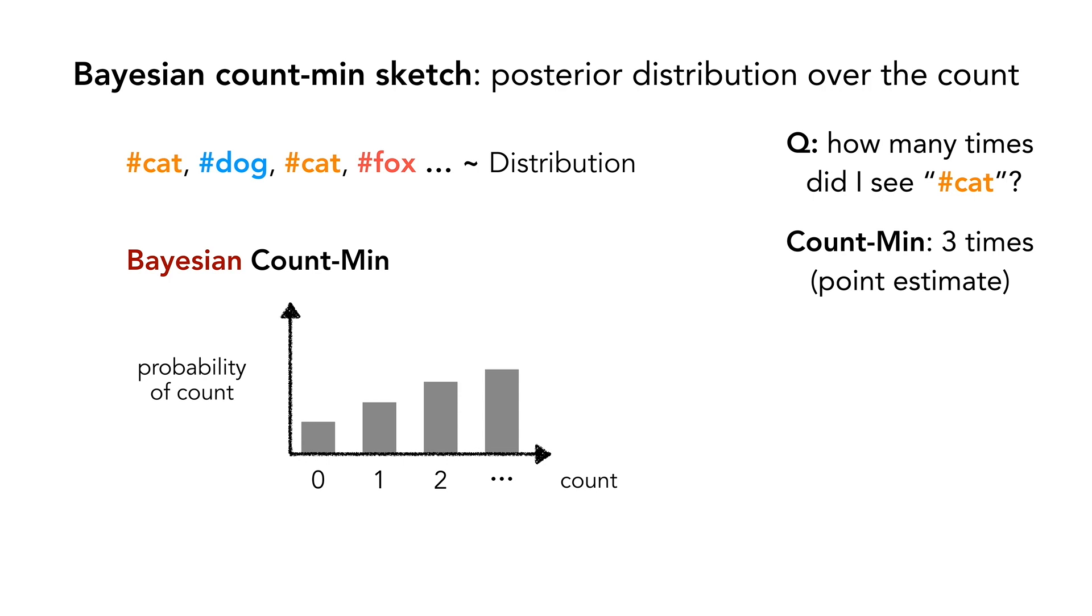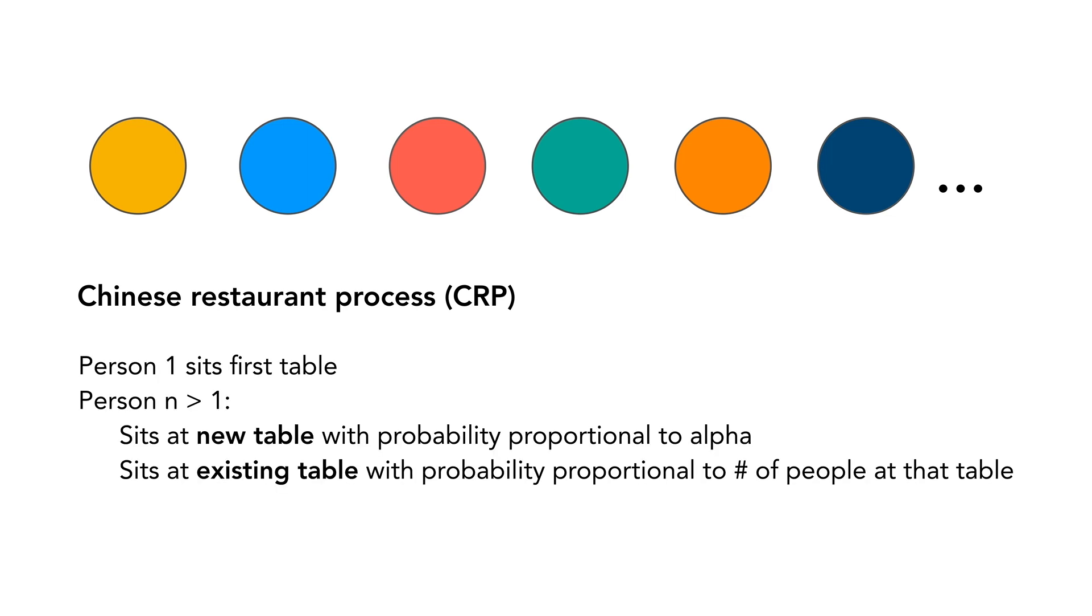We assume that the tokens are generated from the so-called Chinese restaurant process with parameter alpha. Imagine a restaurant with an infinite number of tables. At the first time step, the first person enters the restaurant and sits at the first table.